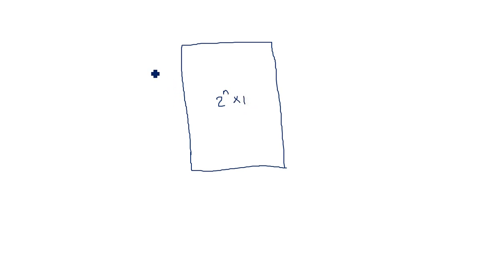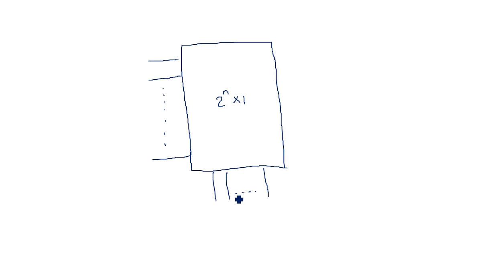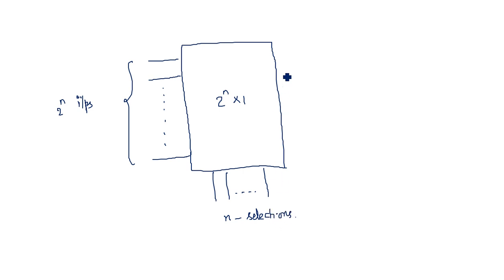The box has 2^n inputs on one side and n number of selection lines. Selection lines are very important and exist for both multiplexers and demultiplexers. Demultiplexer is the opposite action of the multiplexer. Decoders and encoders don't have these selection lines. There is only one output Y.